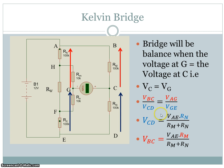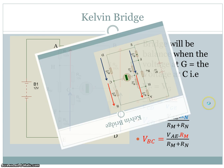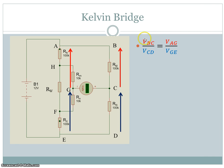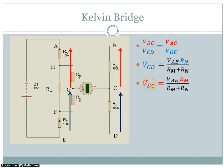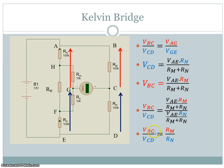That's shown in this equation. The voltage from C to D is the total voltage from A to E divided by the total resistance multiplied by Rn, and similarly from B to C it's just multiplied by Rm instead. So substituting into this ratio, these terms cancel, and the ratio of VBC to VCD equals Rm over Rn.